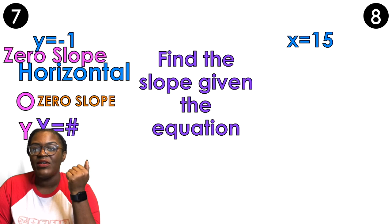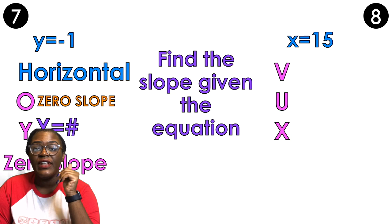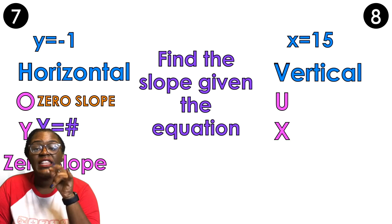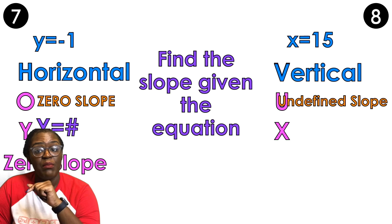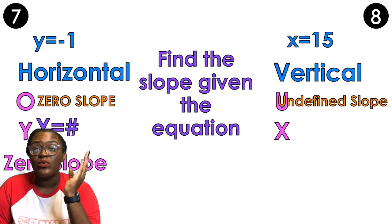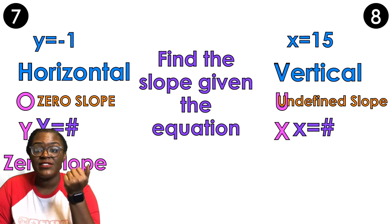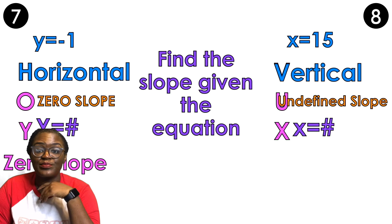Now, if I have number 8, I have X equals 15. That's gonna be a vertical line. Vertical lines always have undefined slopes, and they always look like X equals a number. So because this problem is X equals 15, I know it's a vertical line. So my answer is an undefined slope. Ta-da!